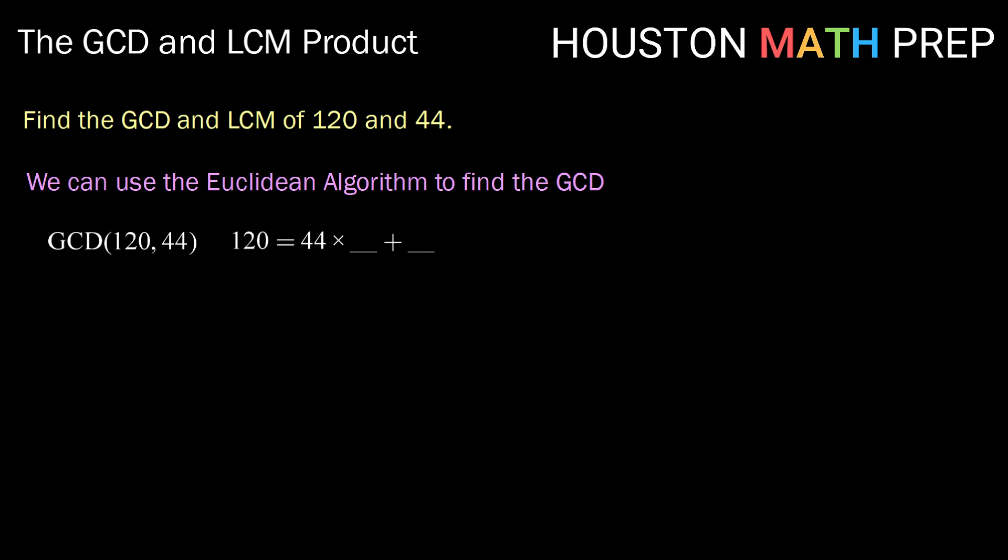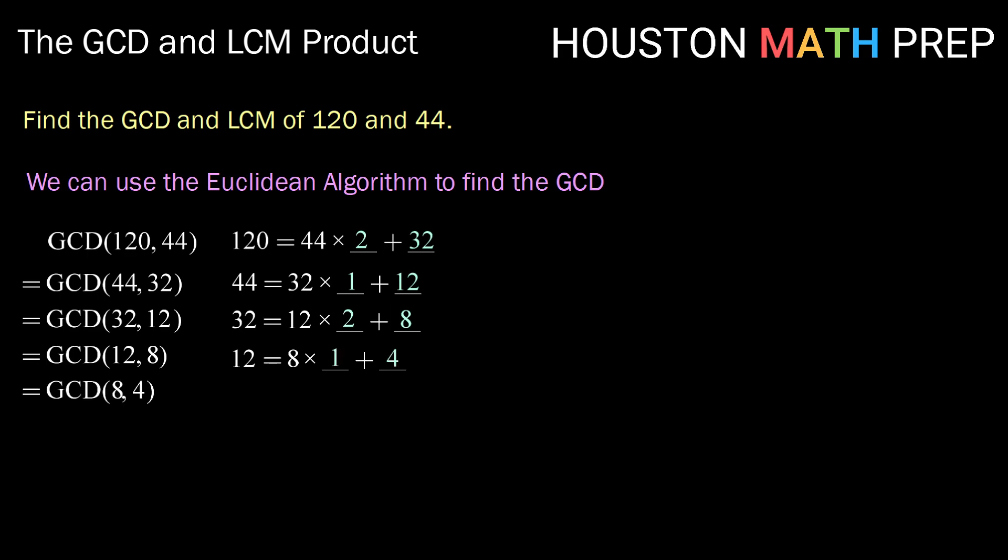If we're using the Euclidean algorithm, then GCD of 120 and 44, because 120 can be written as 44 times 2 plus a remainder of 32, is equivalent to the GCD of 44 and 32. Repeating this pattern we can get down to the GCD of 8 and 4 which is 4. So by the Euclidean algorithm we have that the GCD of 120 and 44 is equal to 4.